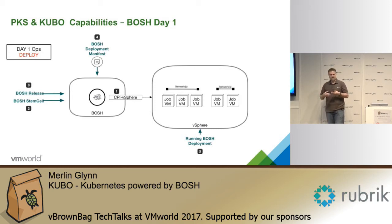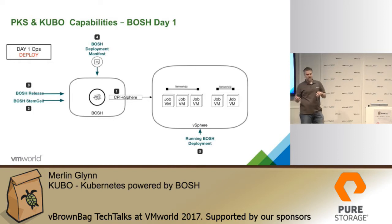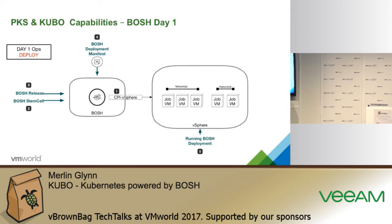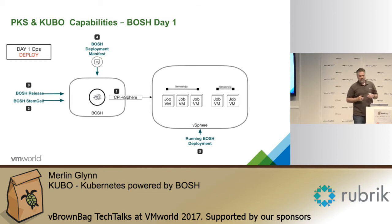You can think of a stemcell as a VM that can be deployed into an environment and then take on a persona of any type of job it needs to. Then you have a BOSH release — that's the actual software being deployed. At a high level, BOSH is going to take a release and a stemcell — the release includes all the software, all the parts of Kubernetes — and combine them in a declarative manner to create instantiated VMs, or jobs, that perform particular functions and roles inside the Kubernetes cluster.